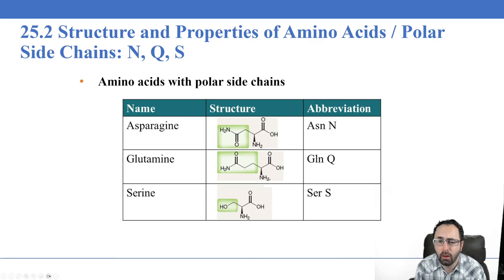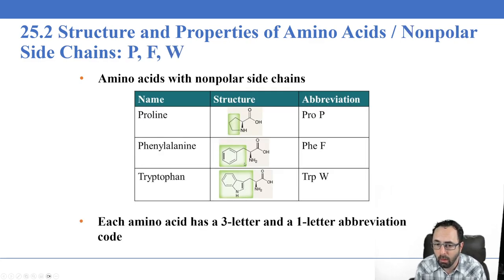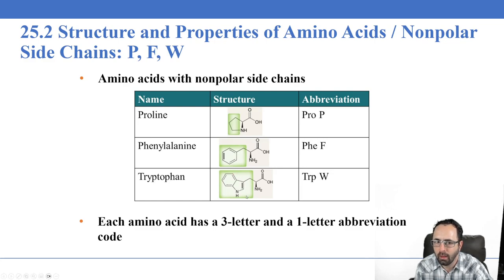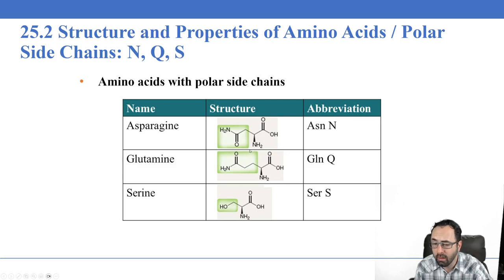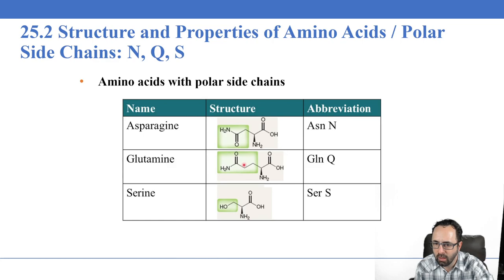Now here are some amino acids with polar side chains. The previous ones were mostly hydrocarbons. Tryptophan has a nitrogen, but is classified as nonpolar because although it has one polar part, it is dominated by the nonpolar portion. The polar side chain amino acids include asparagine, which has an amide group — very polar with its carbonyl group. Glutamine is like asparagine but with one additional carbon: asparagine has one carbon then the amide group, glutamine has two carbons then the amide. Serine contains one carbon and a hydroxyl group.